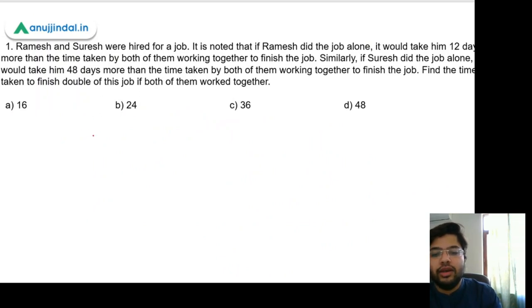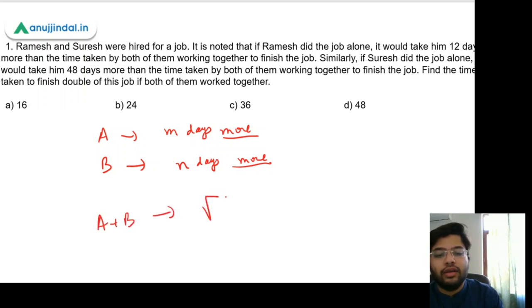So what's the shortcut method? Suppose you are given there are two workers A and B. A takes M days more than the time taken by A and B together to complete the work. Similarly, B takes N days more than the time taken by A and B to complete the work. So in that case, the time taken by A and B together is nothing but square root of M times N.